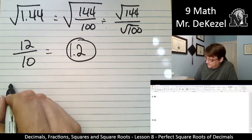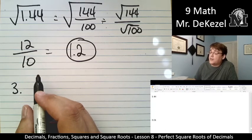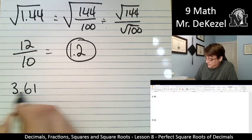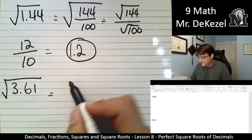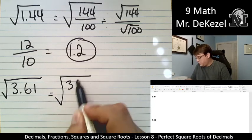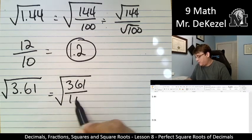3.61. Sorry. I'm going to move the decimal over two places. Turn this into a fraction. That's the root of 361 over 100.